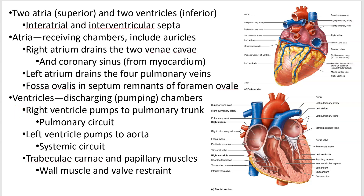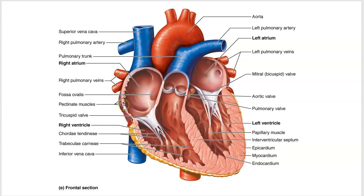Inside the heart you'll see things called trabeculae carnea, which are these little ridges, and papillary muscles, which are these little bumps. If you're going to trace blood flow through the heart, you can start anywhere because it's a cycle — it's a big circuit. We'll start here in the vena cava.